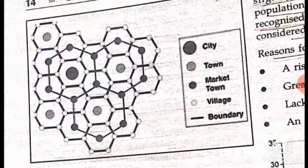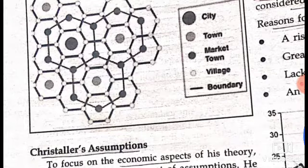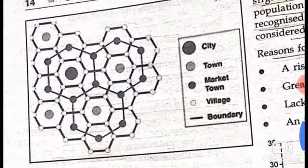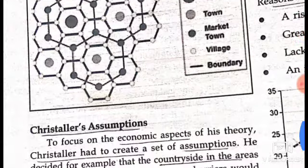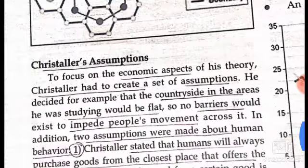The hierarchy goes from the large city, then towns, then market towns, then markets, and then villages, arranged in a boundary system.